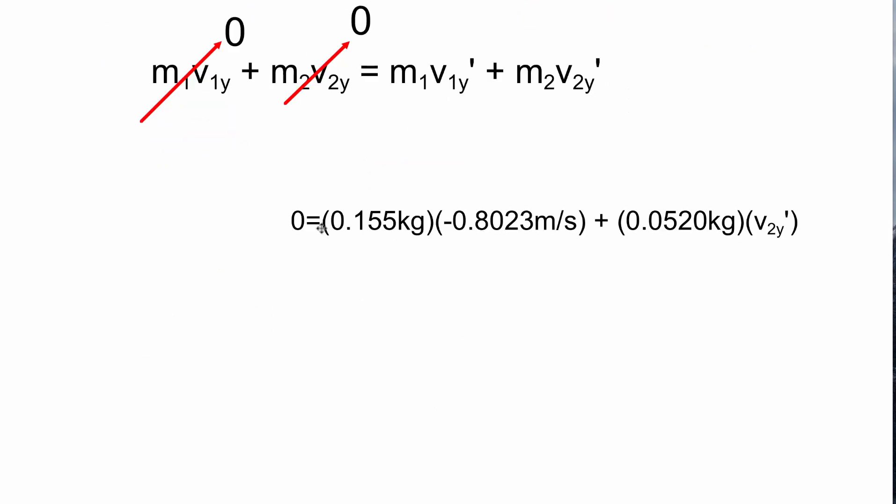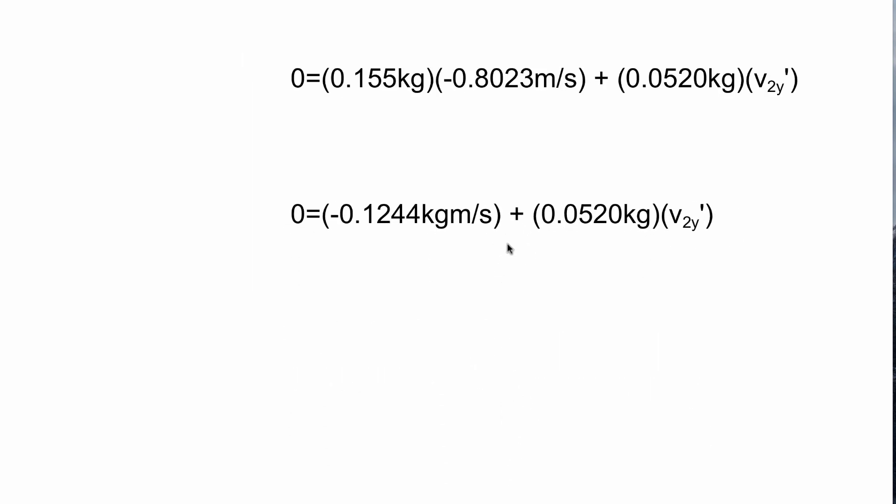So that simplifies the equation substantially. We can rewrite it with 0 on the left hand side. m1 0.155 kilograms, v1y prime was negative 0.8023 meters per second. m2 was 0.0520 kilograms and we don't know v2y prime. If we take these two terms and multiply them together we'll get negative 0.1244 units kilogram meters per second. Let's add that to both sides.